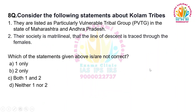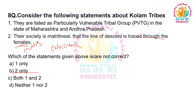So the answer is two only, because their society is patrilineal and descent is traced through the males, not the females.